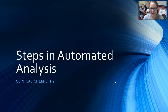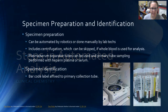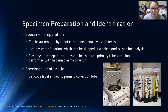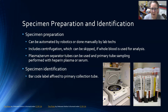Hi everybody, it's Dr. A. In our second video on automated analysis, we're going to look at the steps of automated analysis in clinical chemistry. The first step is specimen preparation and identification. Specimen preparation for chemistry mostly involves centrifugation and then getting the specimen to the analyzer, which can be automated by robotics if you're in a highly automated lab.